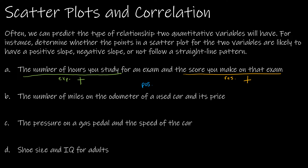Next: the number of miles on the odometer of a used car and its price. As the number of miles change, the price of the car will change — so odometer miles is explanatory and price is response. As the number of miles increases on the odometer, the car is going to be worth less and less. So as explanatory increases, price decreases — that is considered a negative slope.